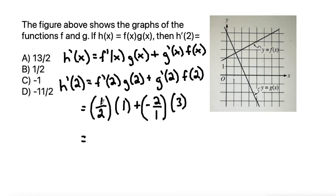So here we can simplify. 1 half times 1 is 1 half. Negative 2 over 1, or negative 2 times 3 is negative 6. And then if we find a common denominator, that would be 1 over 2 minus 12 over 2 makes negative 11 over 2. And that would be the final answer.